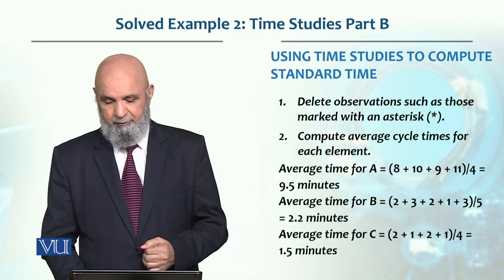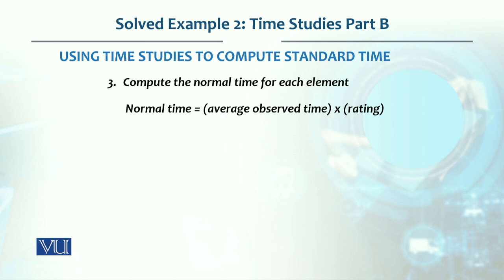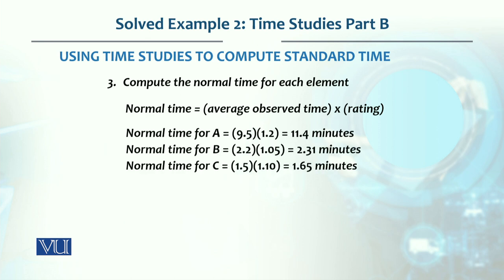Now we compute the normal time for each work element. This requires an experienced observer to apply a performance rating. Work element A was performed 20% faster than normal, work element B was 5% faster, and work element C was 10% faster than a normal average worker.